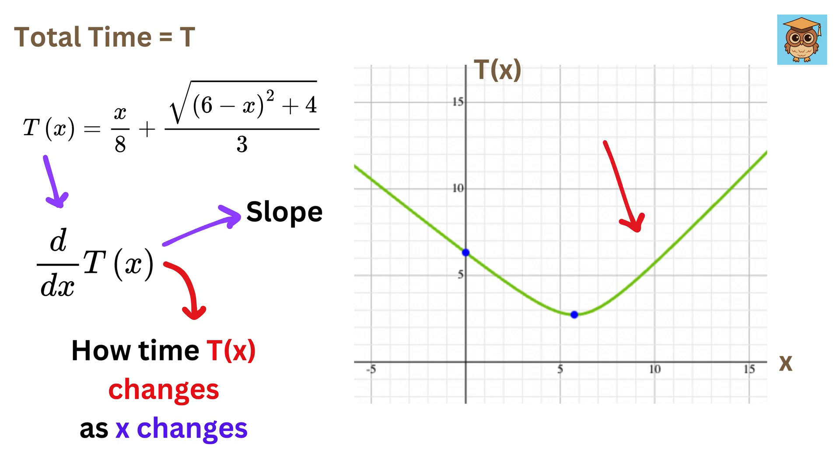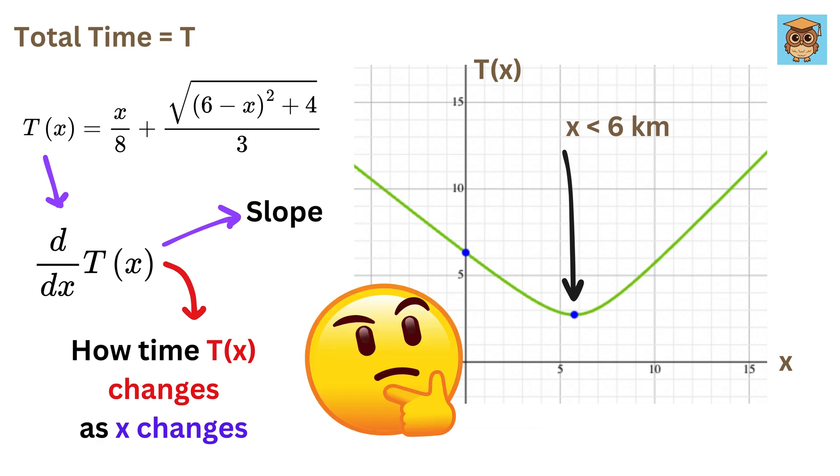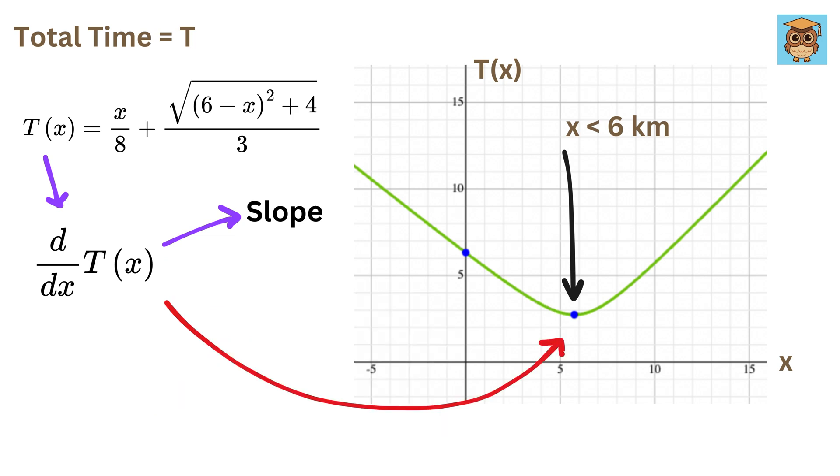Look at this graph of time T of X with respect to X. We can clearly see that as X increases, total time decreases, but after this point, it again starts increasing. And this minimum point is less than 6 kilometers. But how to find this minimum point? Here comes the magic. What can we say about the derivative or slope of this curve at this minimum point? Yes, you are right. The slope is zero.